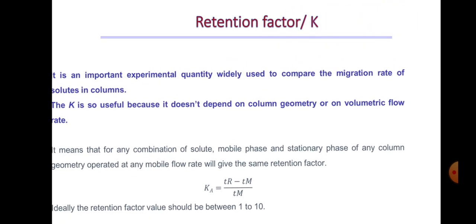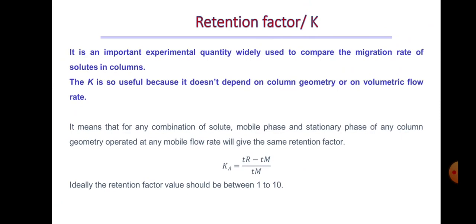The retention factor, abbreviated as k, is an important experimental quantity used to compare the migration rate of solutes in a column. It is useful because it doesn't depend on column geometry or volumetric flow rate. The formula is k = (t_r − t_m) / t_m. Ideally, the value of the retention factor should lie between 1 and 10.